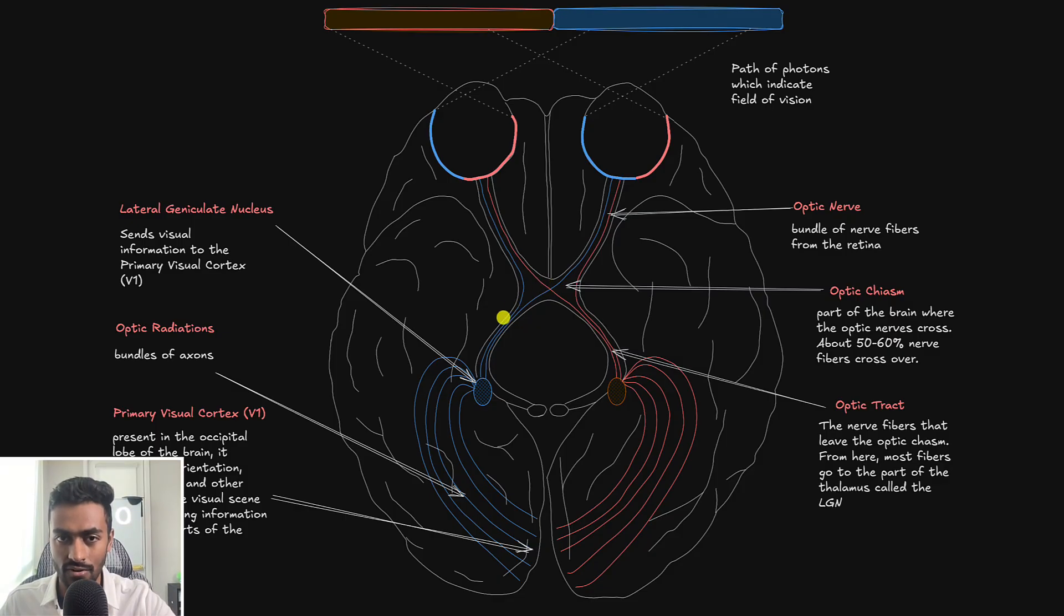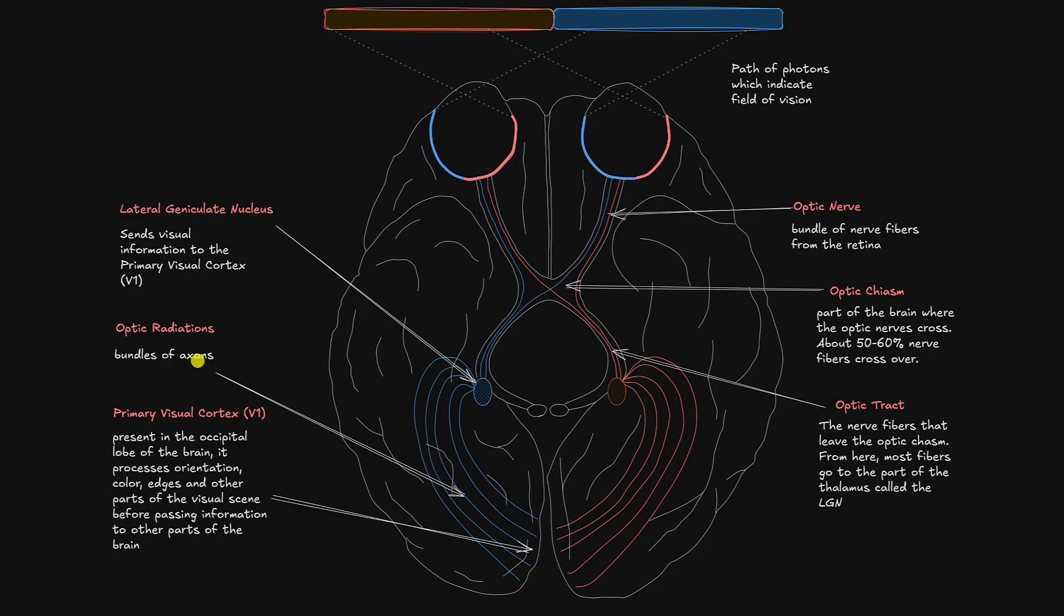Once these nerve fibers cross over, the optic nerve is now known as the optic tract. And most of the nerve fibers over here are going to go to the thalamus and specifically the part of the thalamus known as the lateral geniculate nucleus. And it is from here that this will relay information in the form of a bundle of axons known as optic radiations. And it's going to relay this information to the occipital lobe of the brain and a part of it known as the primary visual cortex or V1.